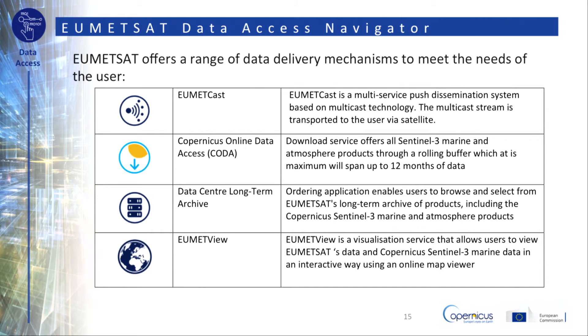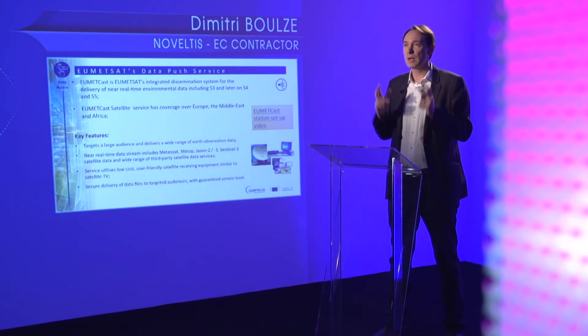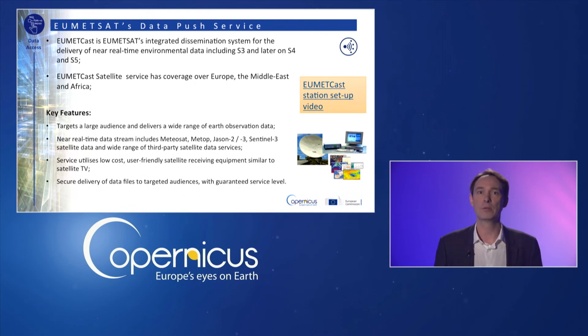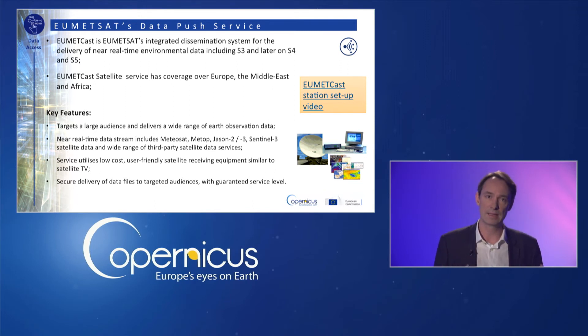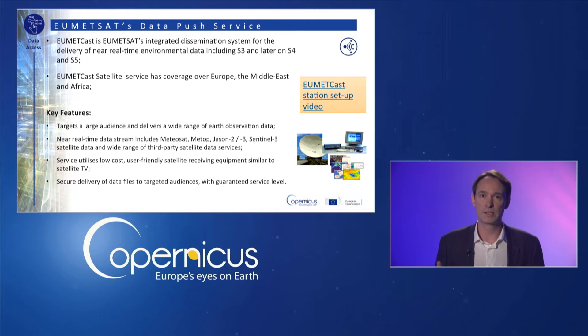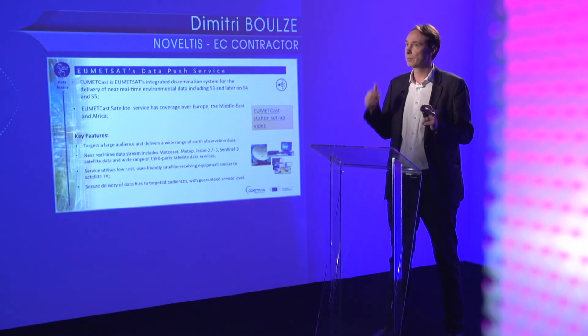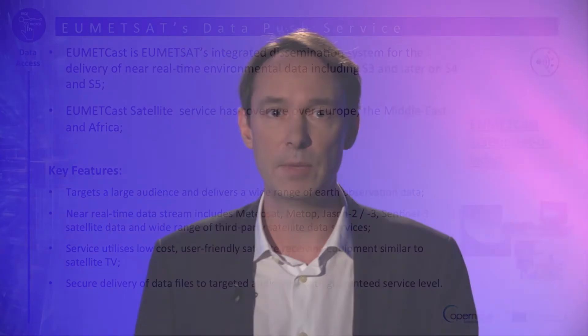You can see that these mechanisms are available directly from the EUMETSAT homepage. EUMETCast is EUMETSAT's integrated dissemination system for the delivery of near real-time environmental data, including Sentinel-3 and later Sentinel-4 and Sentinel-5. EUMETCast's satellite service covers Europe, the Middle East and Africa. Its key features are that it targets a large audience and delivers a wide range of Earth observation data. The near real-time data stream includes Meteosat, Metop, Jason-2 and 3, Sentinel-3 satellite data, and a wide range of third-party satellite data services. The service uses low-cost, user-friendly satellite-receiving equipment similar to a TV dish.